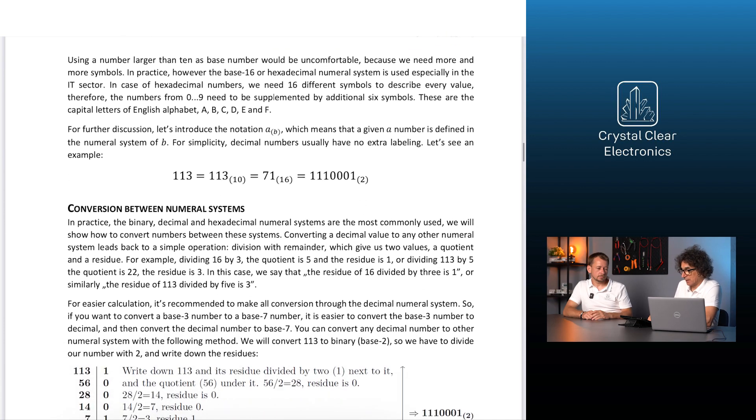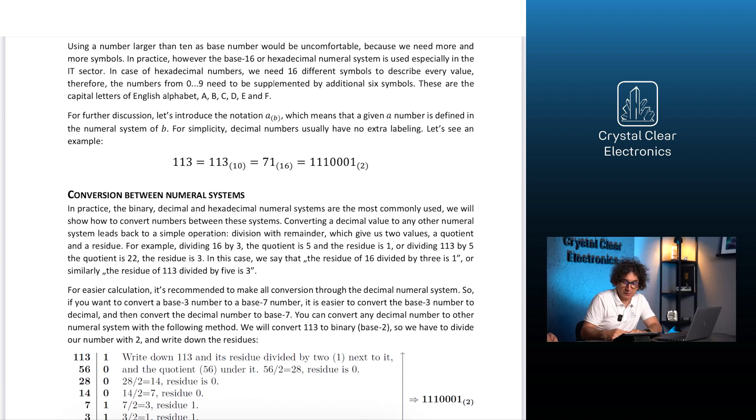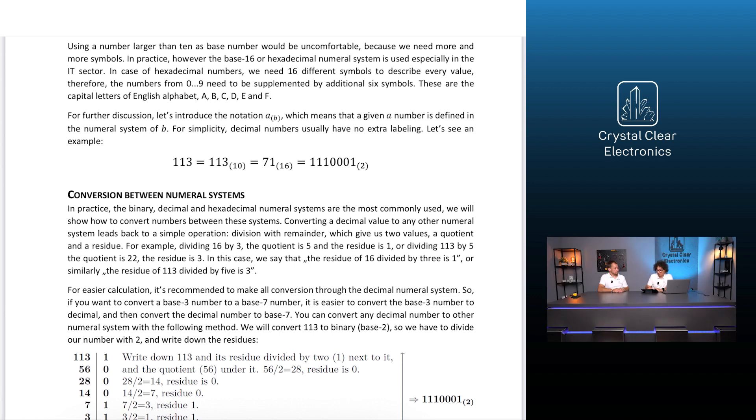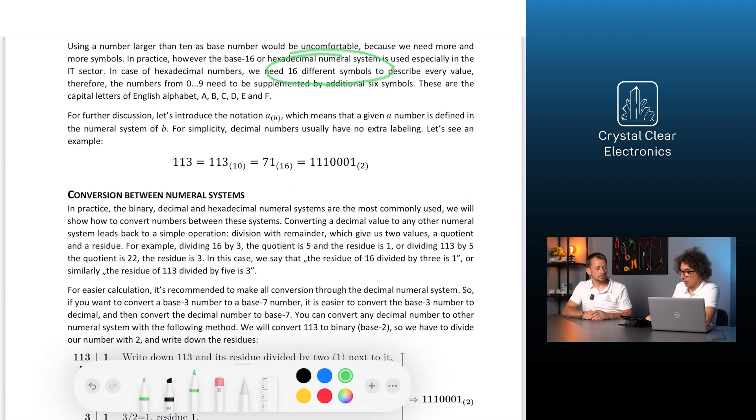Using a number larger than 10 as base number would be uncomfortable, because we need more and more symbols. In practice, however, the base 16 or hexadecimal numeral system is used especially in the IT sector. Later we'll see why. In case of hexadecimal numbers, we need 16 different symbols to describe every value. Therefore, the numbers from 0 to 9 need to be supplemented by additional 6 symbols.